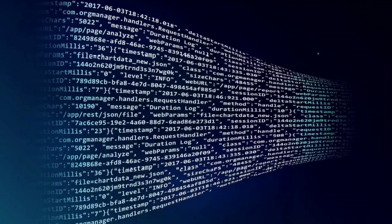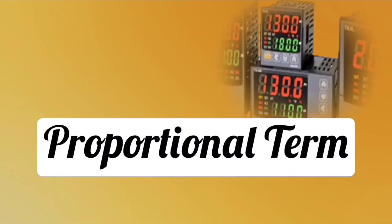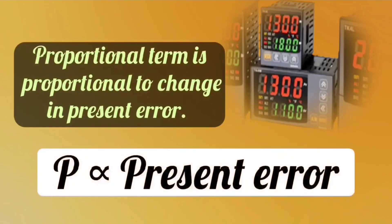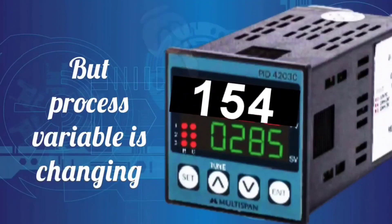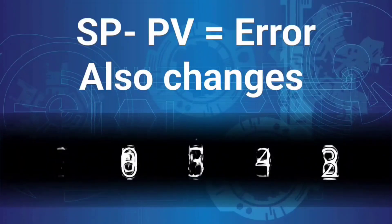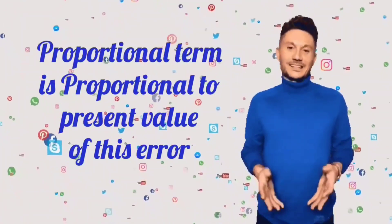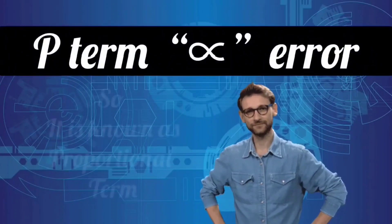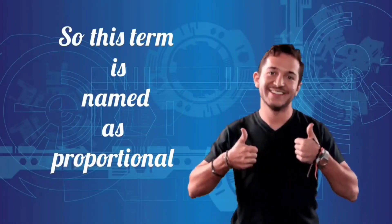First of all, let's see P for proportional term. The proportional term is proportional to the change in the present error. Because this term is proportional to the error, it is proportional to the present value of this error. That is why it is named the proportional term.